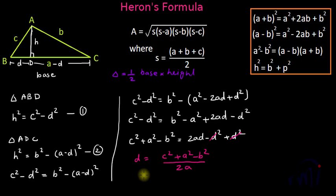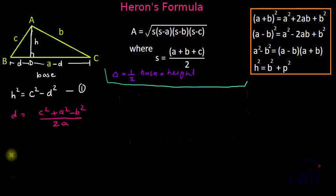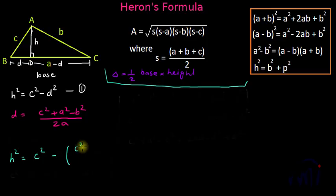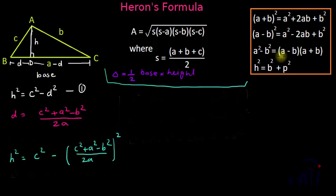Now substituting the value of d into equation one, h² = c² − d² = c² − [(c² + a² − b²) / 2a]². We can apply the difference-of-squares identity a² − b² = (a − b)(a + b), rewriting h² as [c − (c² + a² − b²)/2a] × [c + (c² + a² − b²)/2a].